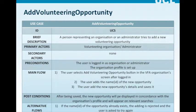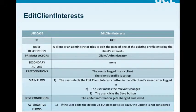Next is the add volunteering opportunity, which can only be done by admin or volunteering organizations. The main flow is: first, the user selects the 'Add Volunteering Opportunity' button in the VFA organization screen after logging in; second, the user adds the name and ID of the new opportunity; third, the user adds the new opportunity's details and saves it. Next is the edit client interest, which is done by either the client or the administrator.